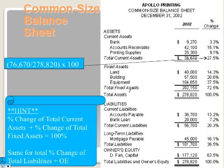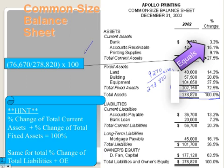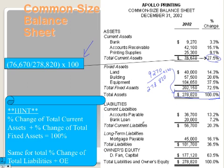Finally, let's look at the common size balance sheet. On the common size income statement we compared everything to revenue; on a common size balance sheet, our base number is total assets — we compare everything to total assets. For example, bank is 3% of total assets: $9,270 divided by $278,820 times 100. Total current assets are 27% of total assets. A hint: the percent of total current assets plus the percent of total fixed assets should equal 100%, because together they make up all assets. The same applies to liabilities and owner's equity — those percentages should also add up to 100%.